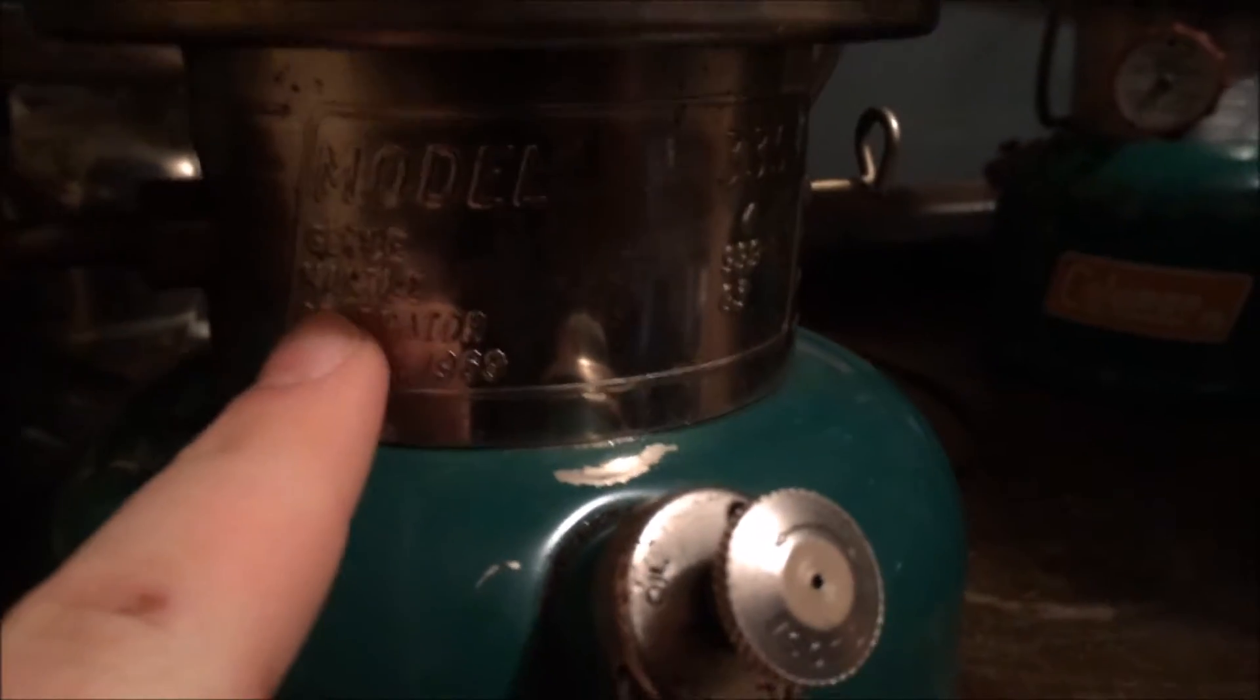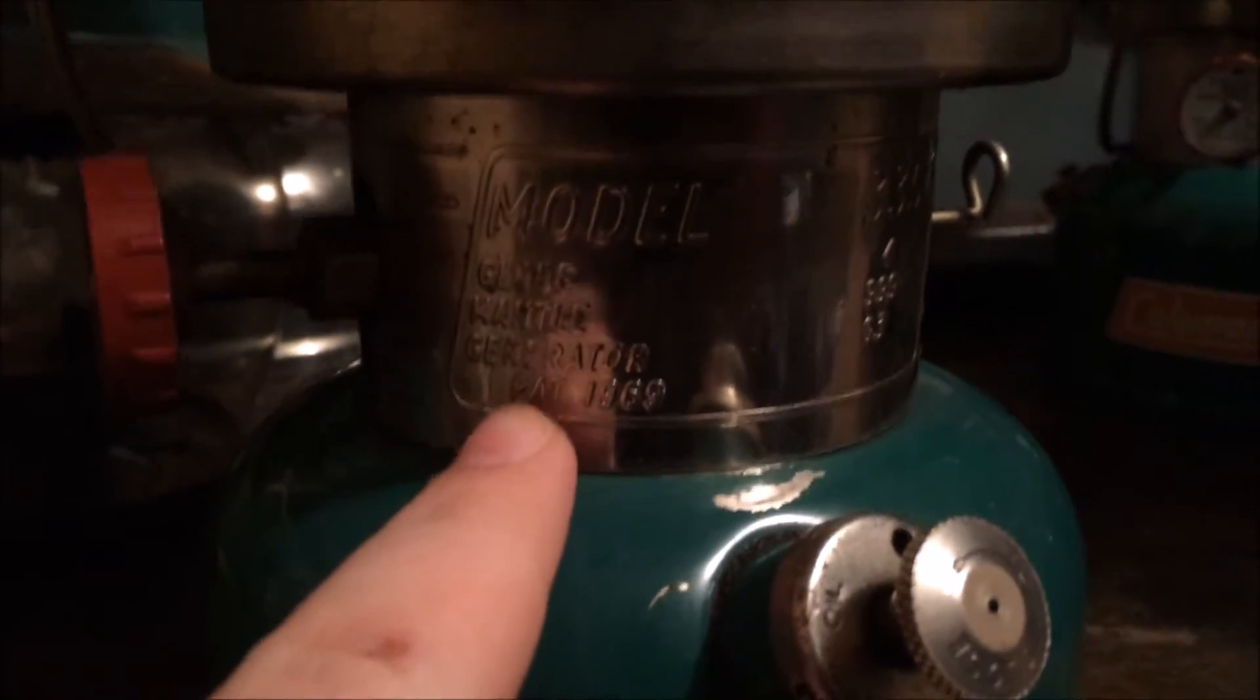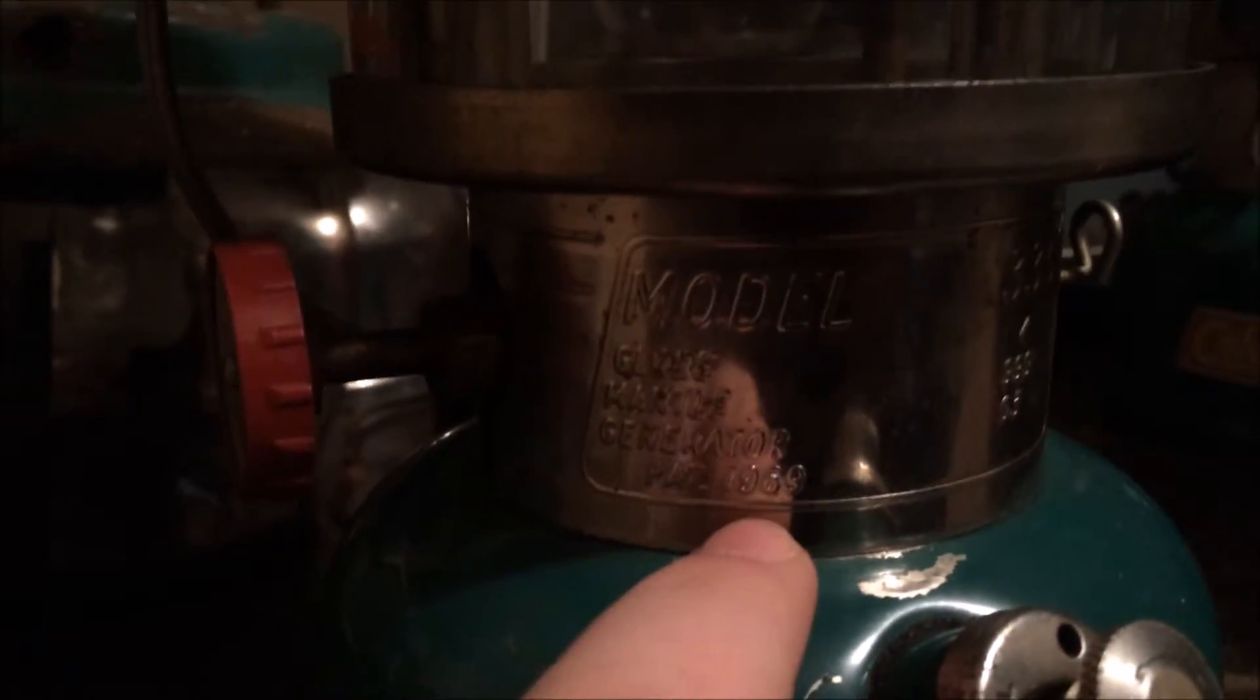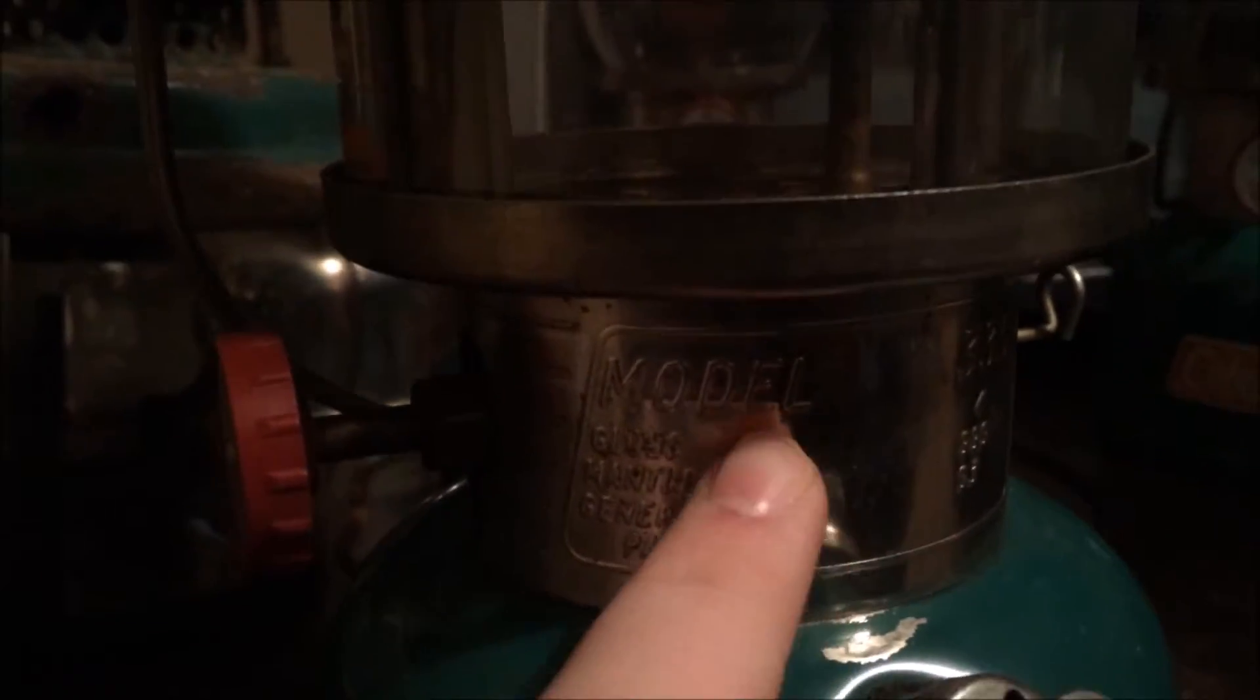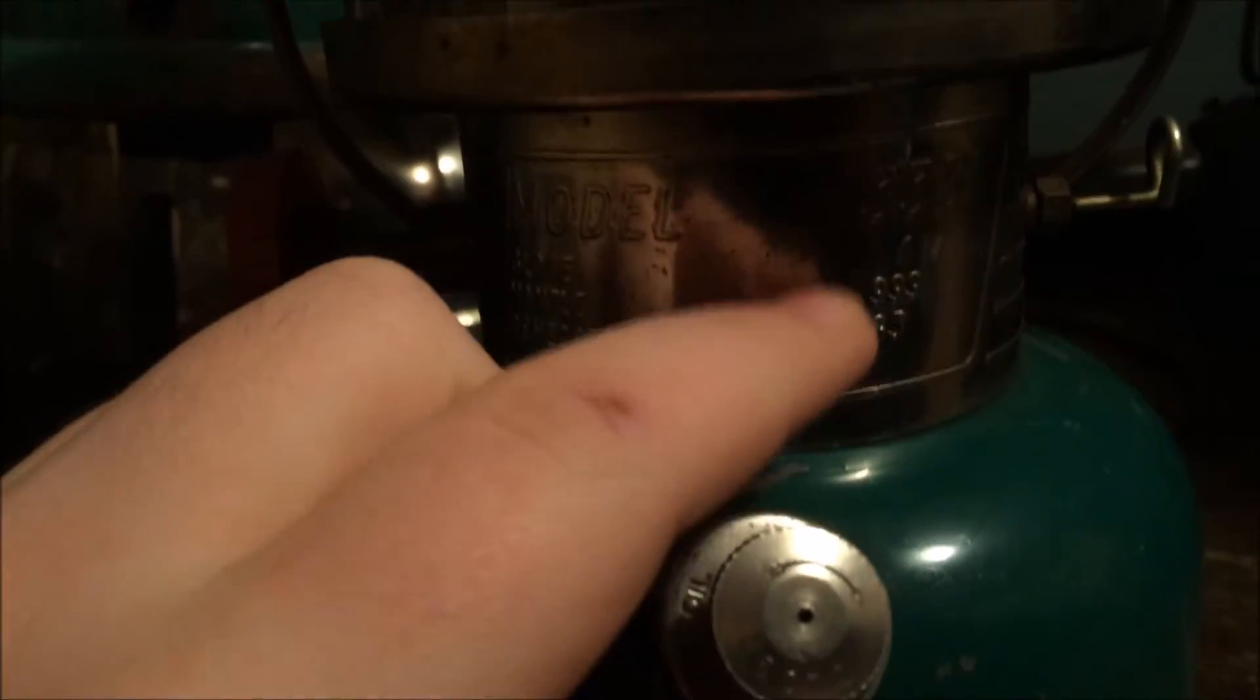You can see here where it says model and all this info here, like globe, mantle, generator, and then patented 1969. That's all to the left of it, and you have the 335-49999-G3. So this collar style is unique to the 1970 models.